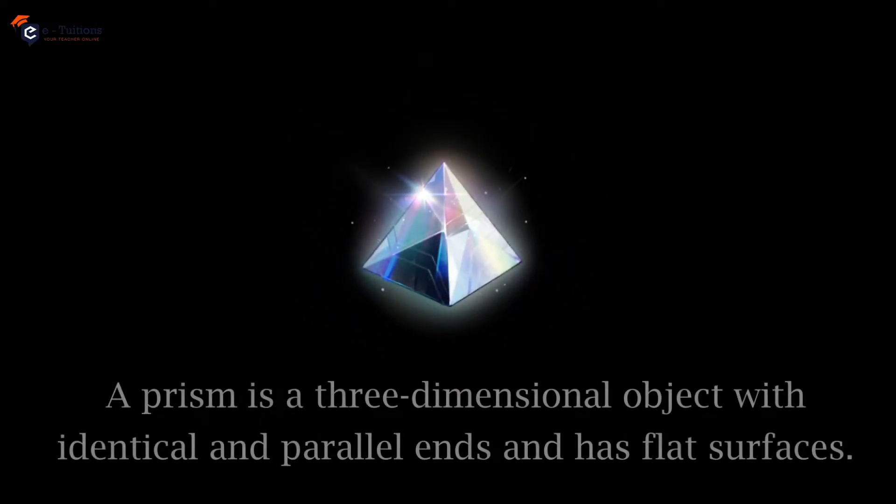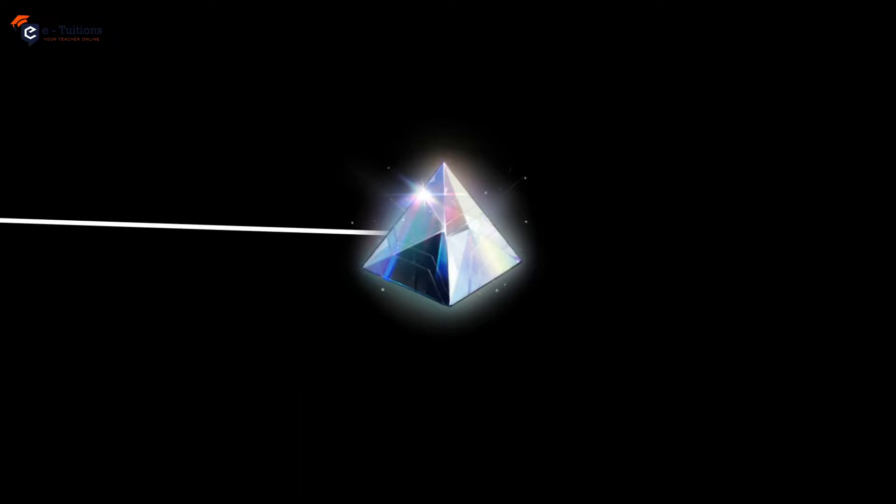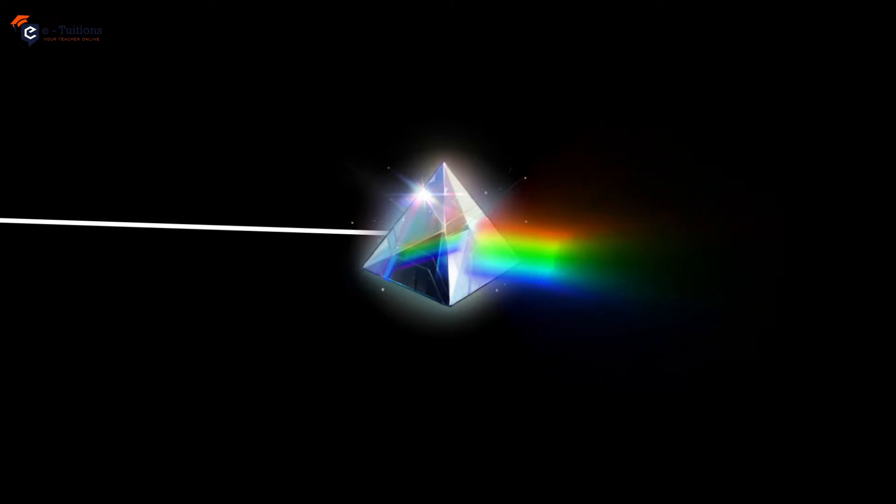A prism is a three-dimensional object with identical and parallel ends and has flat surfaces. When a beam of light passes through a prism, it breaks the beam into seven different color beams.